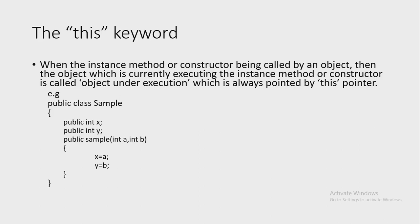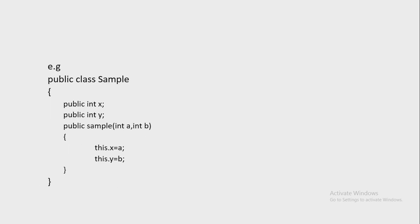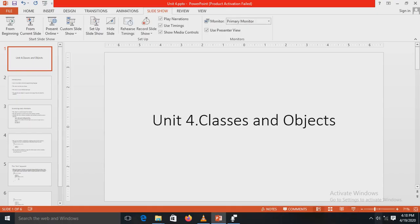For a better understanding, consider a class Sample with public access modifier. Inside that class, two variables are declared: integer x and integer y. There is a constructor of class Sample with parameters integer a and integer b, where x = a and y = b. Using the 'this' pointer, this can also be written as: this.x = a and this.y = b inside the constructor.